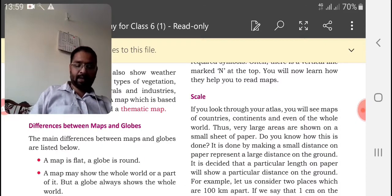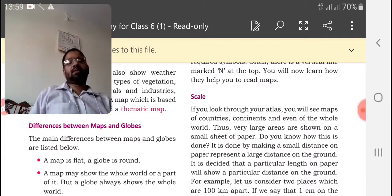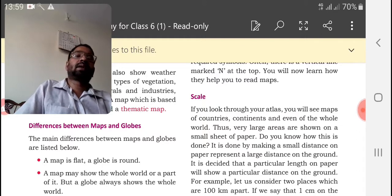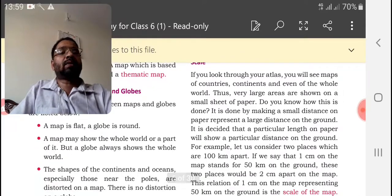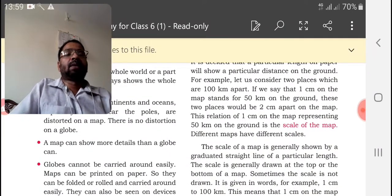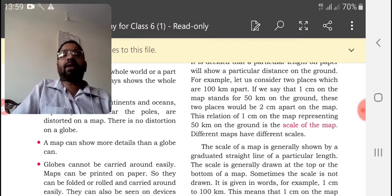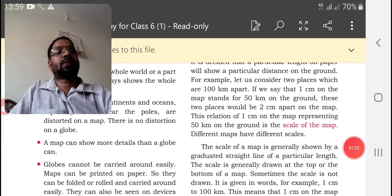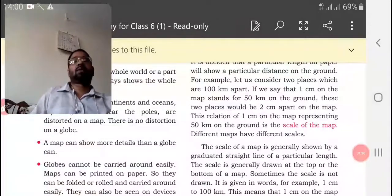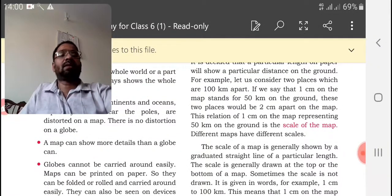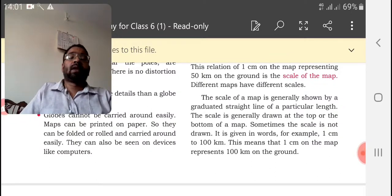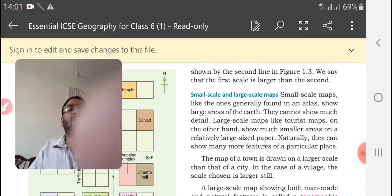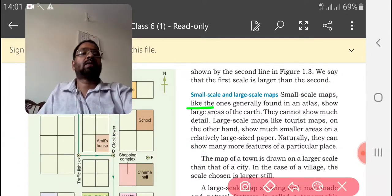Today we are going to discuss scale. Last time we learned about scale. There are two types of scales: one is a large scale and another one is a smaller scale. Large scale gives us more information, but at the same time smaller scale gives us a little information. More details we are getting from larger scale, little details from smaller scale. Usually the smaller scale we use on globe and world maps. Small scale and large scale map.